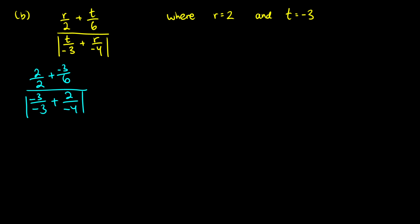So we don't have any exponents. We don't have any parentheses. But we can treat the absolute value bars like parentheses. So we should do that at some point. Okay. So I just see a bunch of fractions. So I'm going to do division on all of these when I can. I'm going to simplify them as much as I can. So we're going to do division on 2 over 2, negative 3 over 6, negative 3 over 3, and 2 over negative 4. And we're going to simplify them as much as possible.